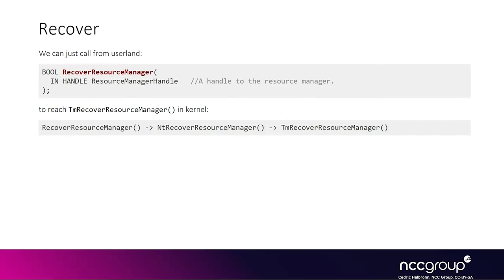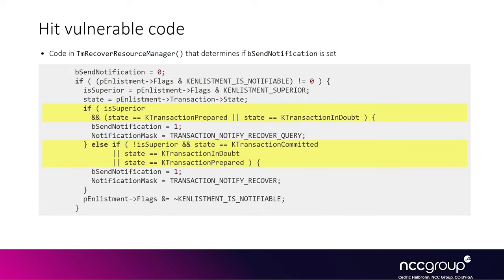The userland function we're interested in is RecoverResourceManager, and it allows reaching the TmRecoverResourceManagerX function — the vulnerable function — through the NtRecoverResourceManager syscall. Once we have reached the vulnerable function, we want to get the bSendNotification flag set.